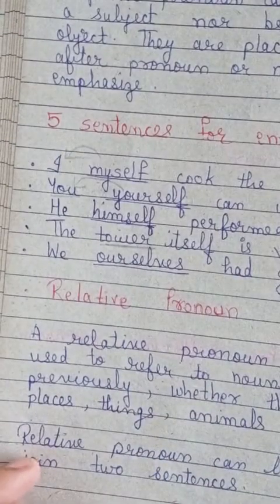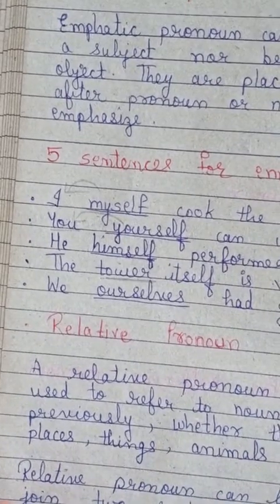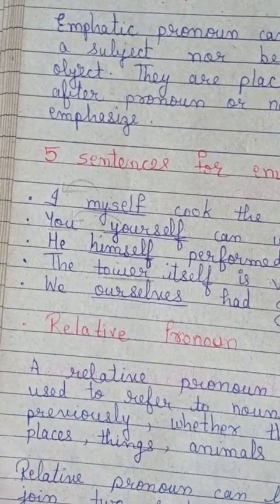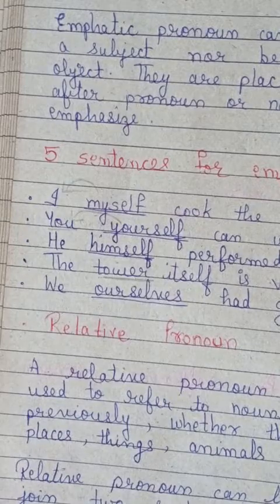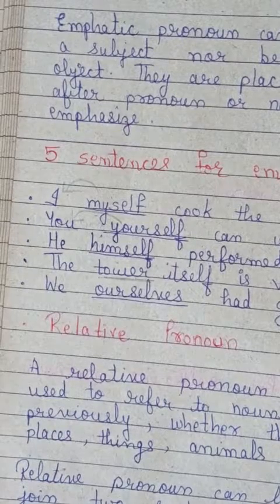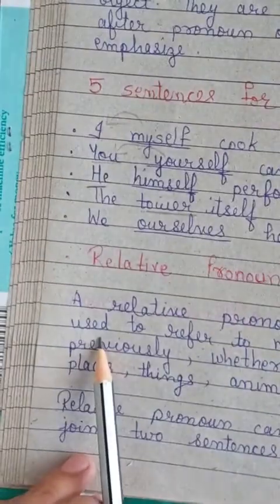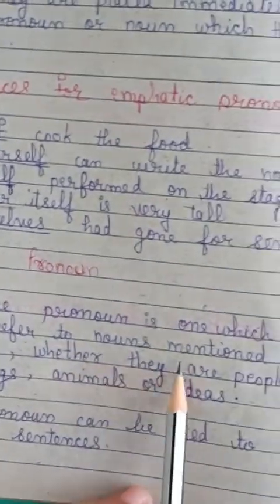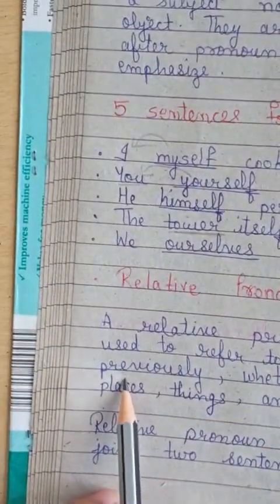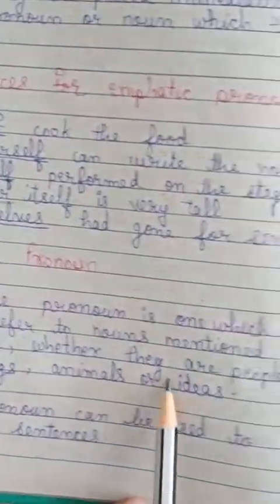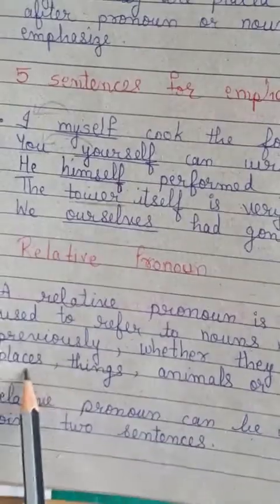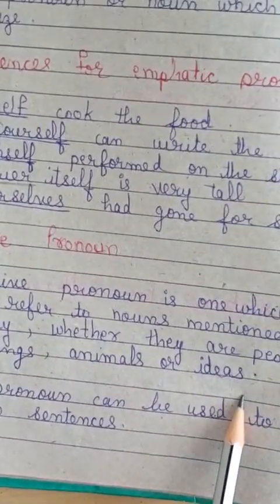Let's continue, because this video can be helpful not only for 10th standard but also for 6th, 7th, 8th, and 9th standard as well. A relative pronoun is one which is used to refer to the noun mentioned previously, whether they are people, place, things, animals, or ideas.